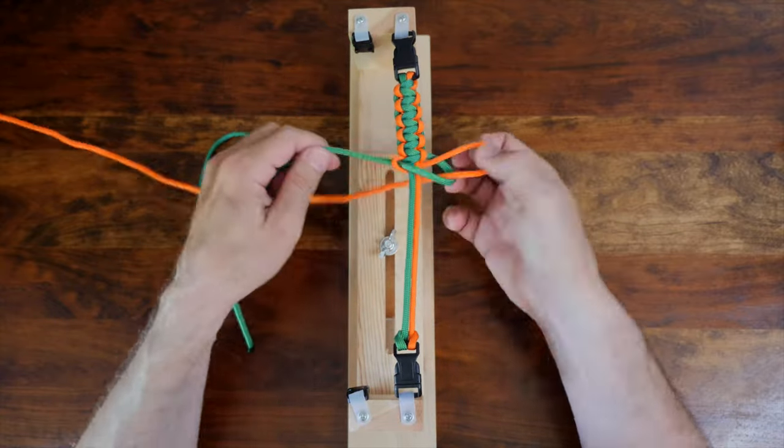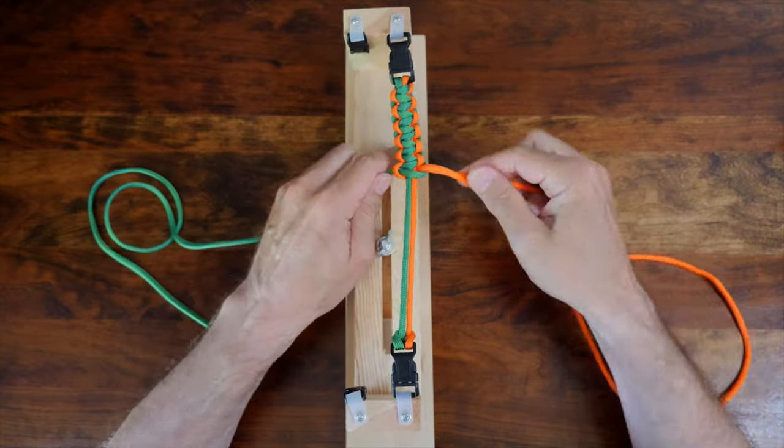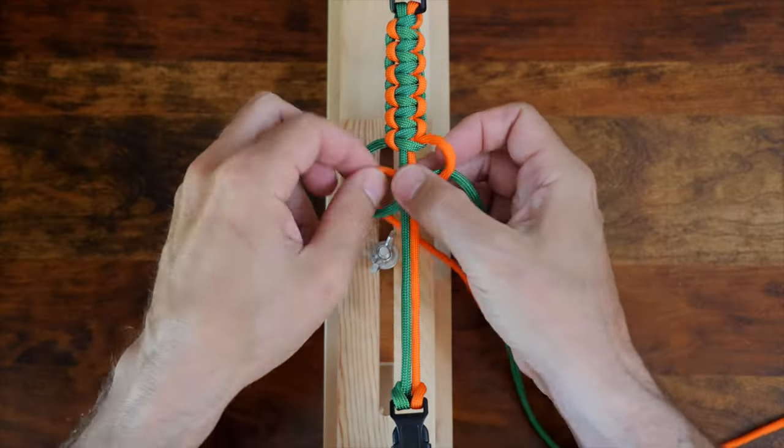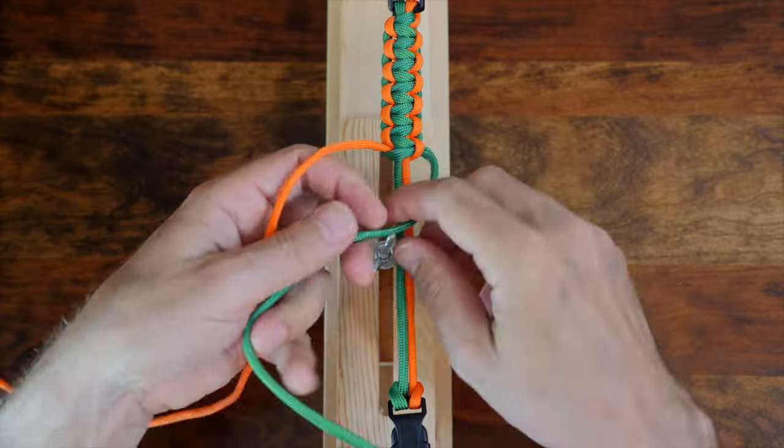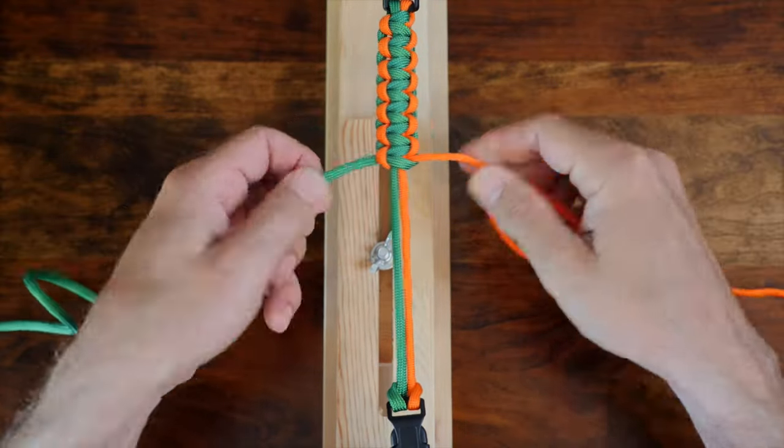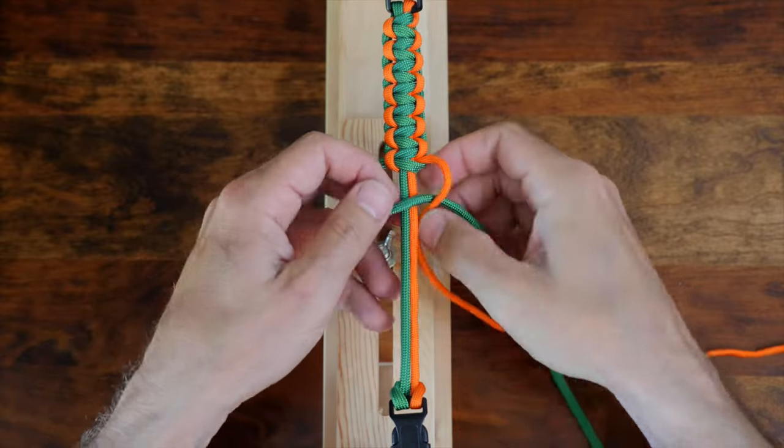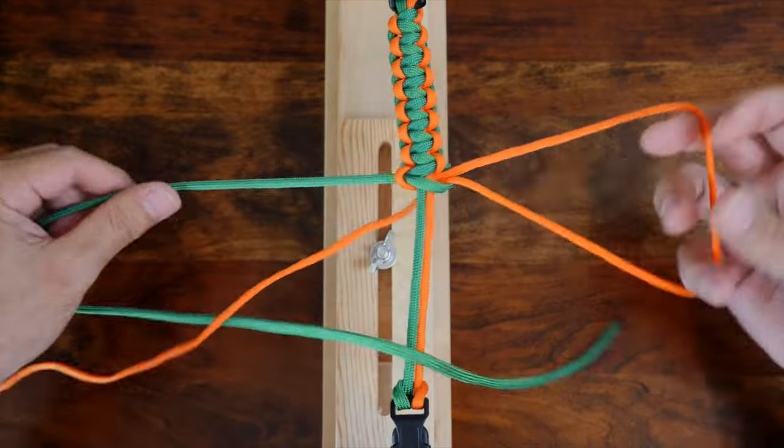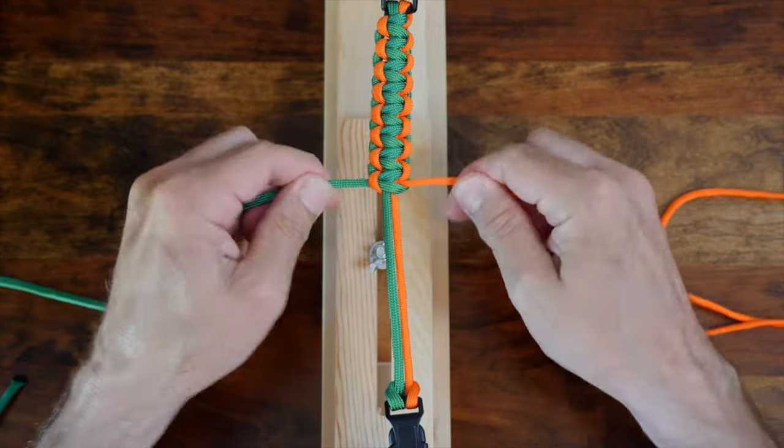The cobra weave is also known as the Solomon weave or Solomon knot, and it can be used in a variety of different decorative knot work. If you're new to paracord crafts and decorative knots, then I highly recommend my video, 10 Paracord Knots Everyone Should Know. That video provides details on how to tie the 10 most common and useful decorative knots. I'll provide a link in the description and also at the end of this video.